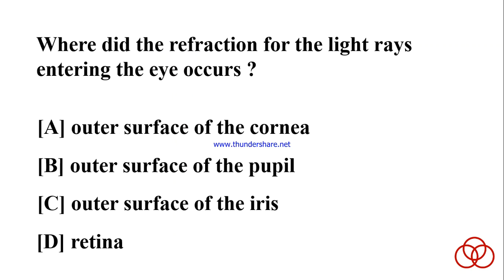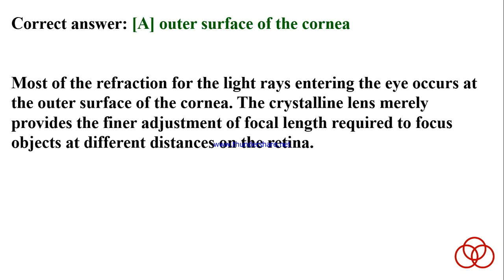Where does refraction for the light rays entering the eye occur? A) Outer surface of the cornea. B) Outer surface of the pupil. C) Outer surface of the iris. D) Retina. Correct answer: A. Outer surface of the cornea. Most of the refraction for light rays entering the eye occurs at the outer surface of the cornea. The crystalline lens merely provides the finer adjustment of focal length required to focus objects at different distances on the retina.